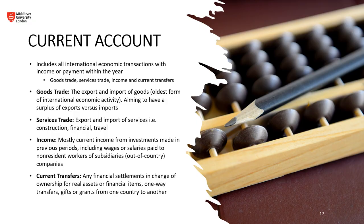The current account includes all international economic transactions with income or payment within the year — everything is recorded, including goods trade, services trade, income, and current transfers. Goods trade is the export and import of goods, the oldest form of economic activity dating back to the Silk Road and the barter system. The whole purpose is to maintain a surplus of exports versus imports — you want to be sending more out of the country than bringing in, because exporting means selling and importing often means buying.